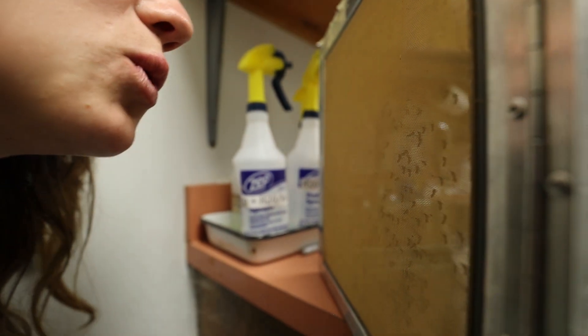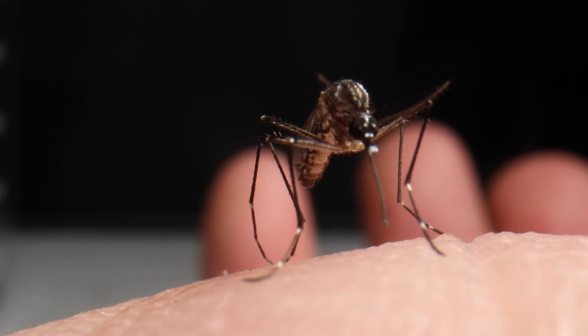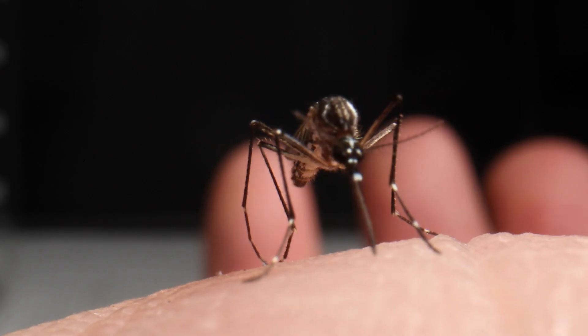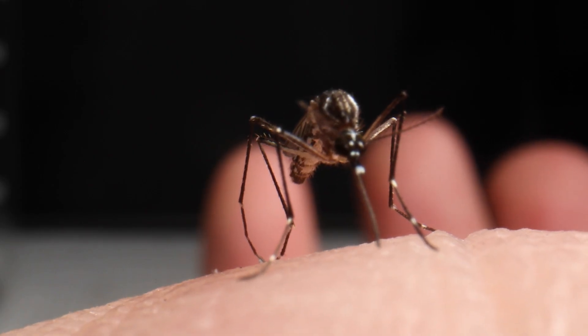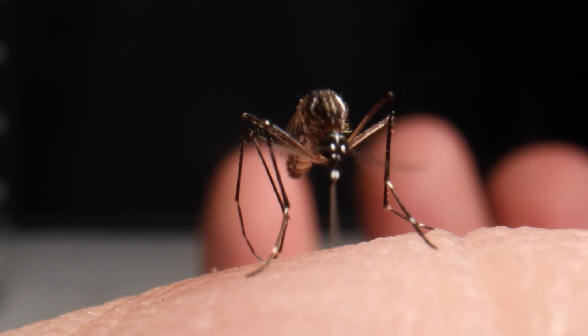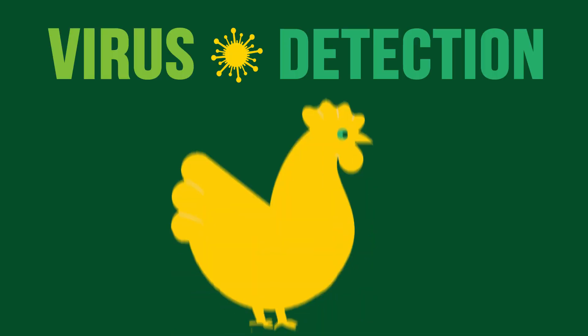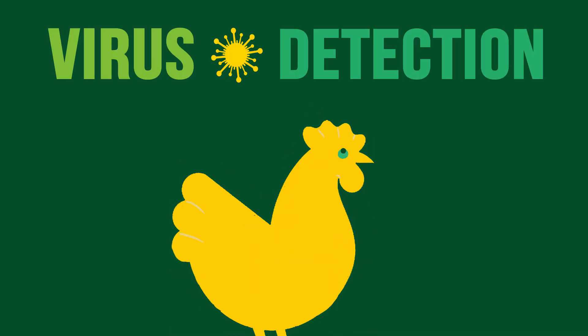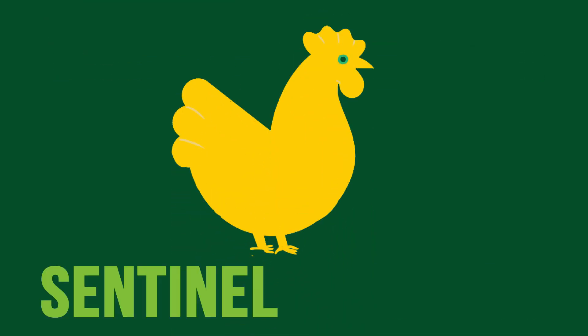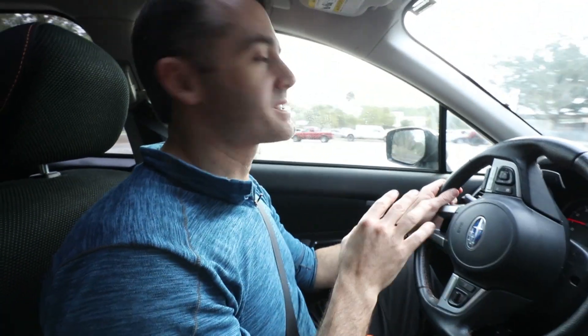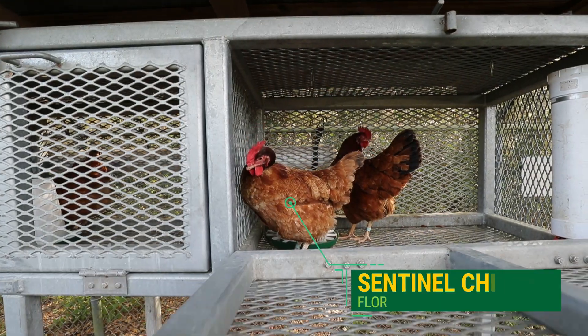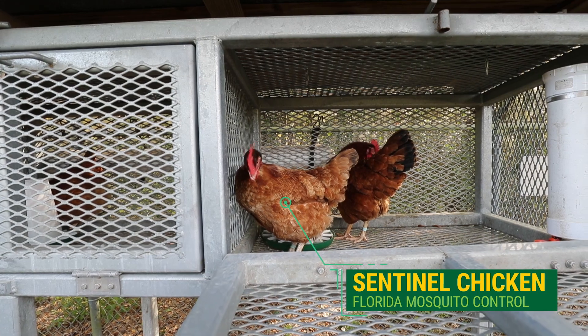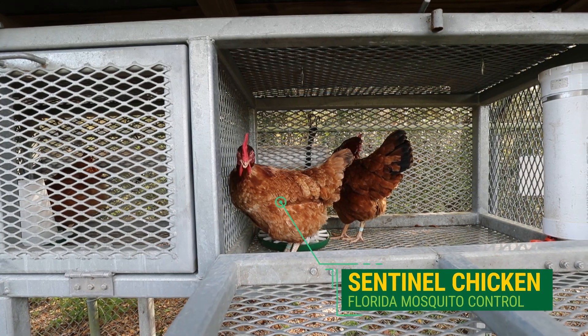Understanding mosquito biology is important because it relates to disease. As it turns out, Florida has an ingenious way to look for diseases — sentinel chickens. We're on the way to see one of the weirdest things I've ever heard of. We're going to use biology to our advantage.